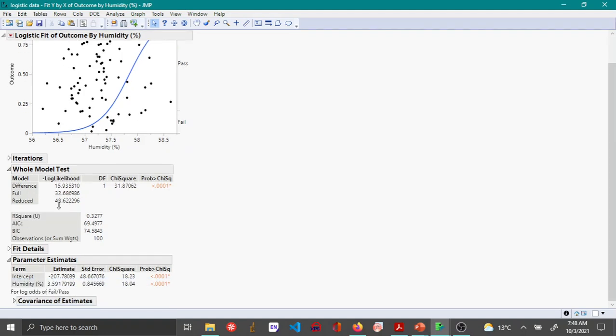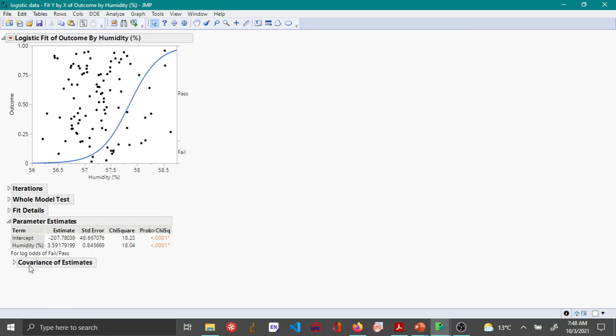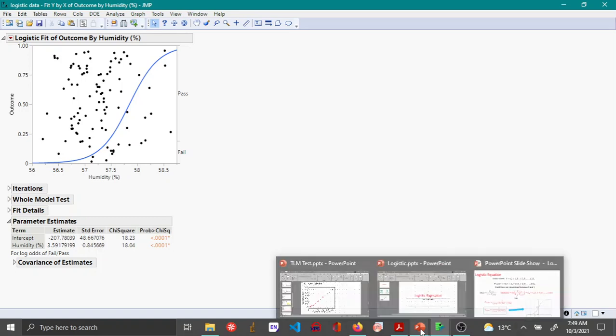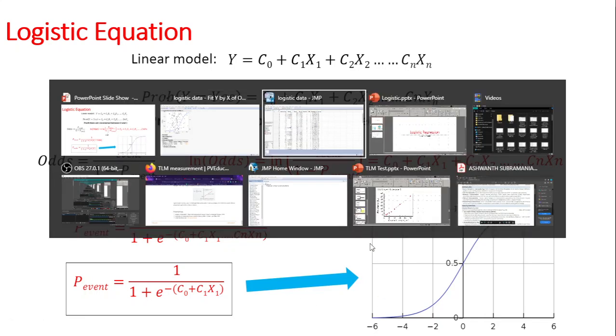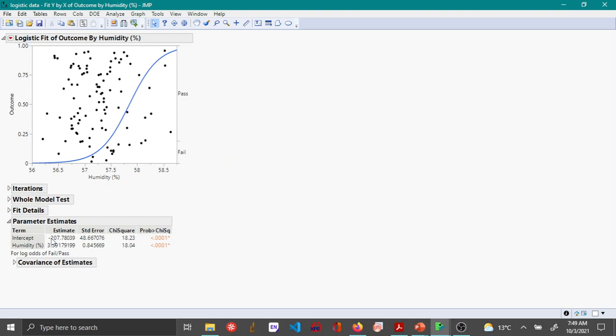By default, JMP shows various statistics. Under the parameter estimates, you have the intercept value and the humidity value, and these are nothing but as I showed in my previous video - the intercept and c0 and c1 are the values. So c0 is minus 207.78, c1 is 3.59. Since c1 has a positive value, this means you have a positively sloped logistic curve.